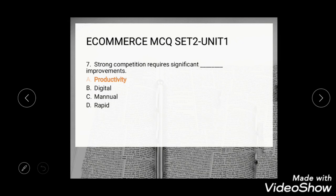Question 7: Strong compression requires significant dash improvements. Options are productivity, digital, manual, and rapid. The correct answer is productivity — productivity improvement is required.